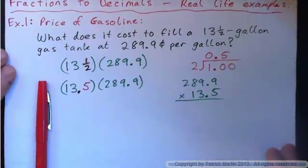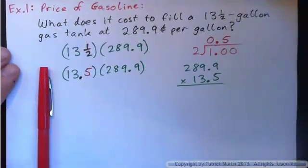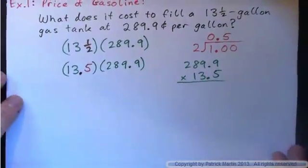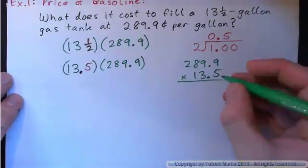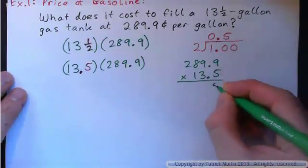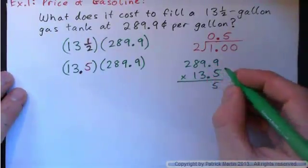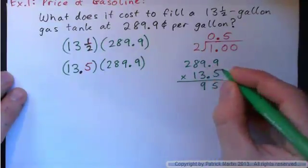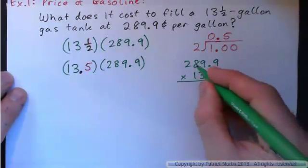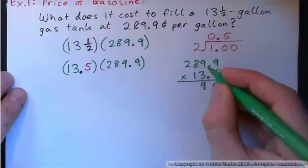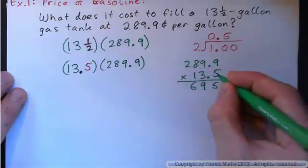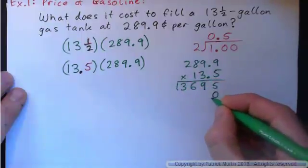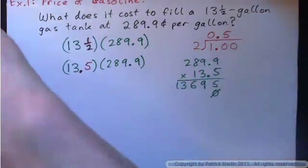Okay, ready? I'm going to do it really fast. Five times nine is forty-five, carry the four. Five times nine is forty-five and four is forty-nine, carry the four. Five eights is thirty-two and four is thirty-six, carry the three. Five twos is ten and three is thirteen. Put down a placeholder zero and multiply by three.